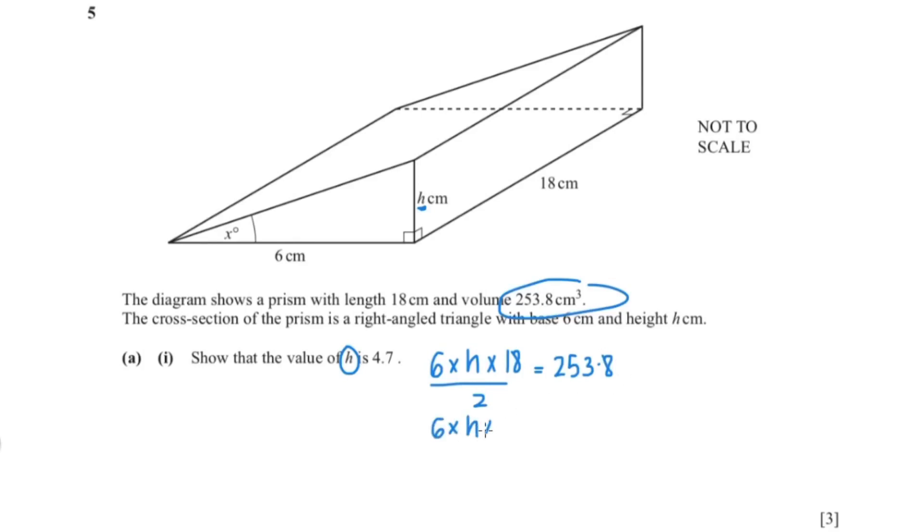So now I'm going to make h the subject. I'm going to bring all the constants to the other side. So that would be multiply by 2. So h would be 253.8 multiplied by 2 over 6 multiplied by 18. And when you put that into your calculator you should get 4.7.